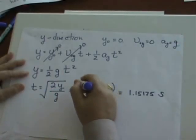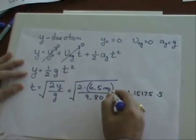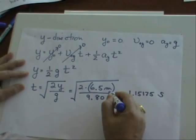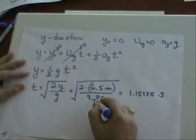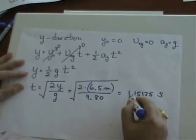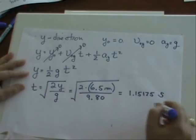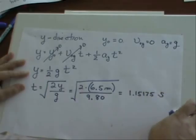Now we have, we were given the y at 6.5 meters. That's the height of the rock, times 2 divided by the gravitational constant 9.8. And you get a number that looks like 1.15175 seconds. And I'm going to leave the long numbers here. I'm not rounding off yet. I'm going to round off at the end.